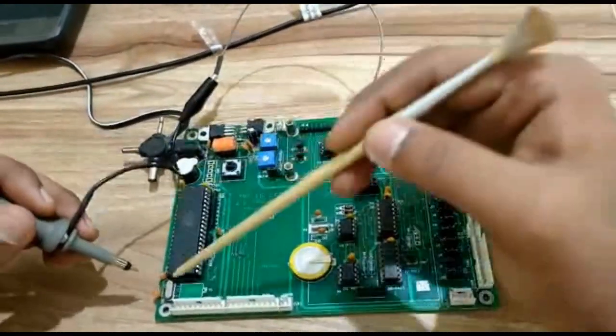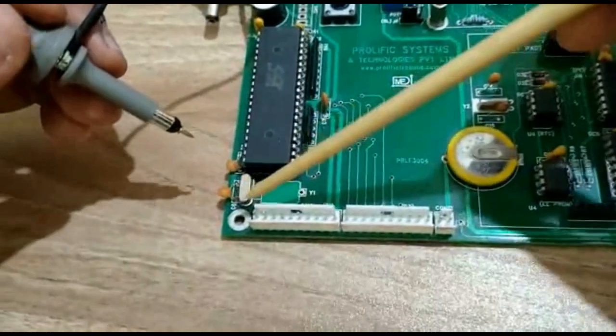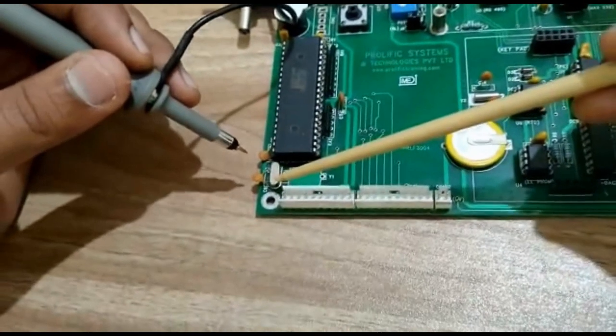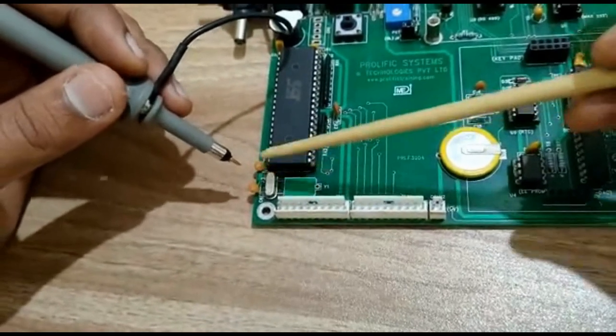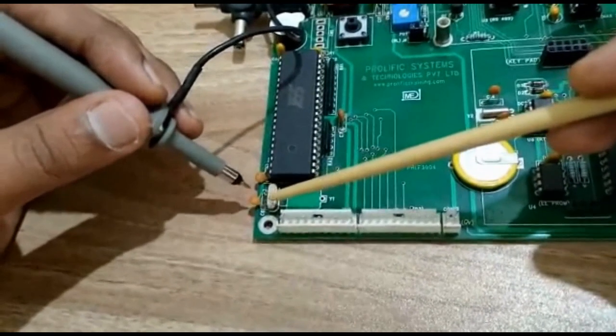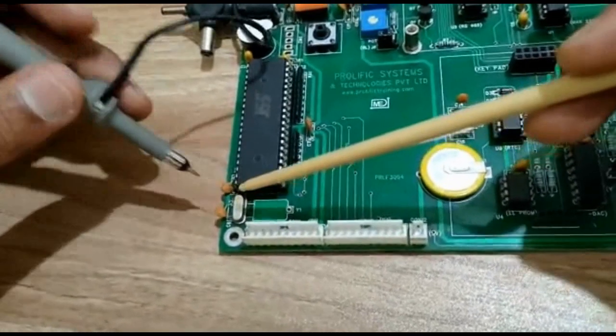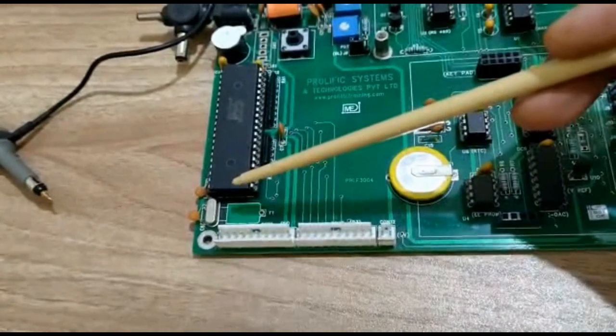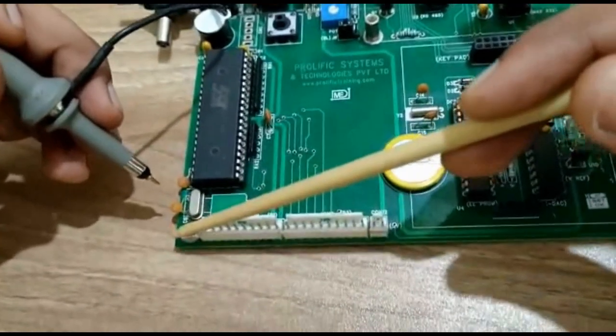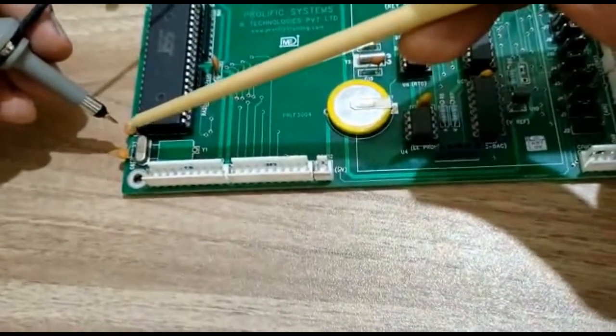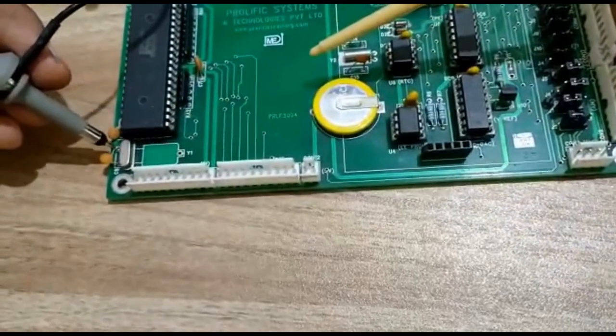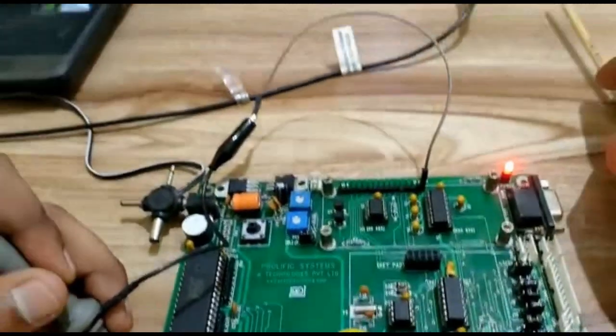Now, here are the two terminals of the crystal oscillator. One end is connected, capacitor is connected to both the ends of crystal oscillator. Capacitor is connected to one end to the ground and another end also capacitor is connected to the ground. Now, this point is where we will be measuring the frequency.